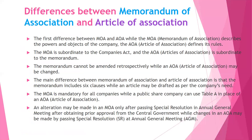In an earlier session we understood the primary document, the Memorandum of Association; in this session we understand the Articles of Association. It is necessary to differentiate between both. The first difference: the Memorandum of Association describes the powers and objects of the company, whereas the Articles of Association defines its rules and regulations. Next, the Memorandum of Association is subordinate to the Companies Act, whereas the Articles of Association is subordinate to the Memorandum. The Memorandum cannot be amended retrospectively, whereas the Articles of Association may be changed.